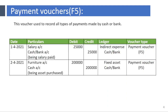Payment Voucher F5. This voucher is used to record all types of payments made by cash or bank. Tally prompts the user to record the debit amount first. For example: paid salary 25,000; purchased furniture 2,00,000.